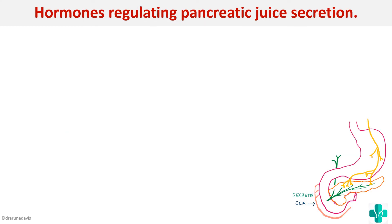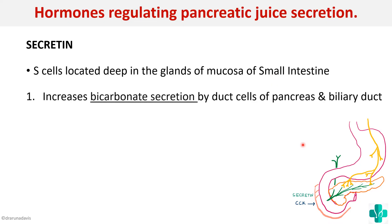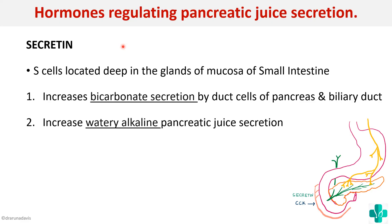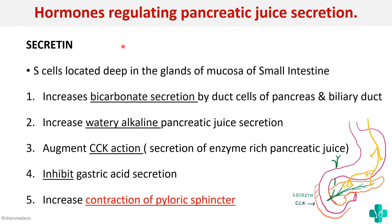The hormones regulating pancreatic secretion: first is secretin. It is produced from the S cells located deep in the glands of the mucosa of the small intestine. It increases bicarbonate secretion by the duct cells of the pancreas and biliary duct, making the secretion highly watery and alkaline. Secretin can also augment the action of cholecystokinin, thereby producing enzyme-rich pancreatic juice. It inhibits gastric secretion so that acidity cannot increase beyond a certain level, and it also causes increased contraction of the pyloric sphincter.